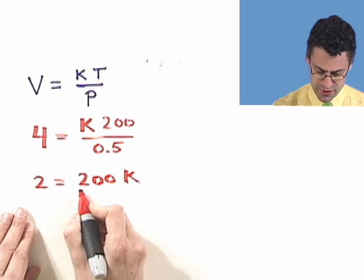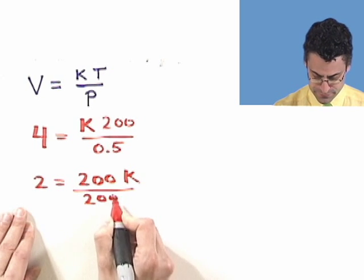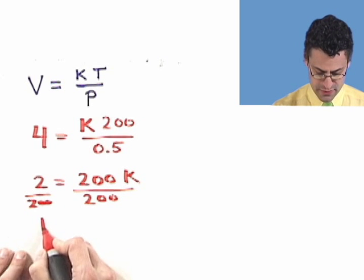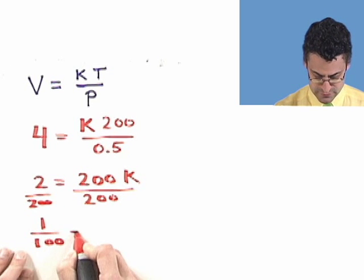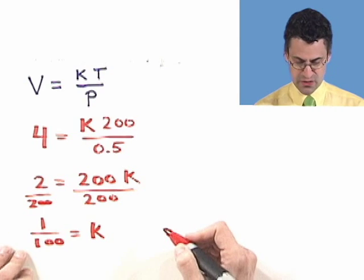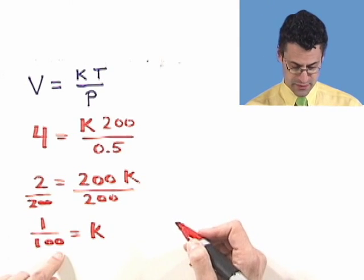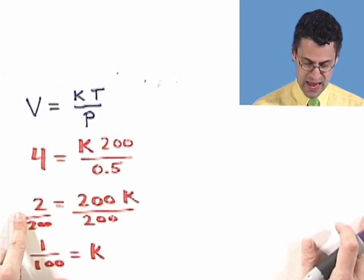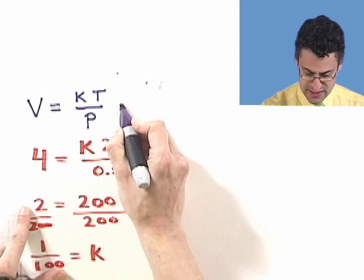And so I see that 2 equals 200 K. If I divide both sides by 200, I just see 1 over 100 equals K, which is 0.01. So now I can come back here and write this out explicitly. Forget about the mysterious K. In fact, what I see now, in this case.